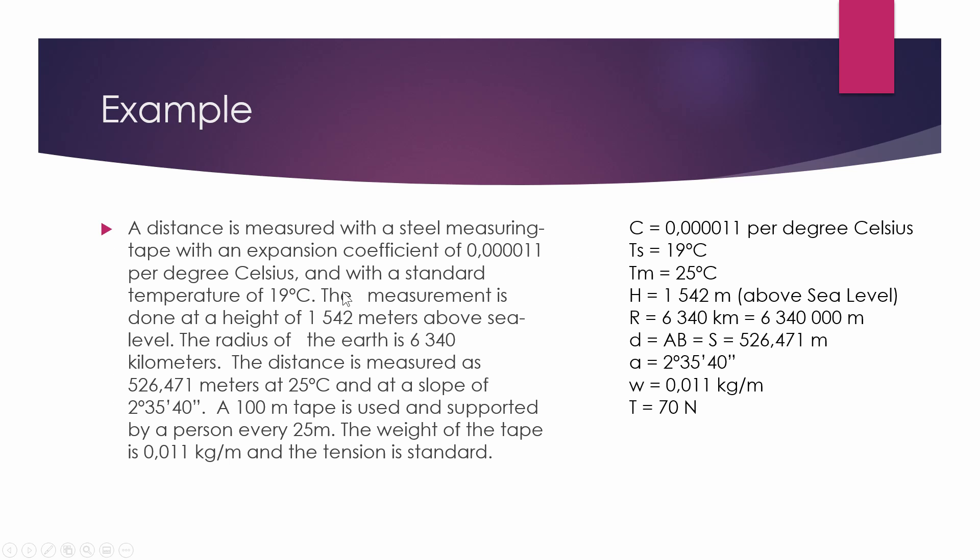So in this example, we have a distance measured with a steel measuring tape with an expansion coefficient of 0.000011 per degree Celsius. So that firstly is our C. That's the first value we write down. I'm going to show you how to put all these values down so you have them before we even start with our calculations. And with a standard temperature of 19 degrees Celsius. So that is our Ts. That is our standard temperature.